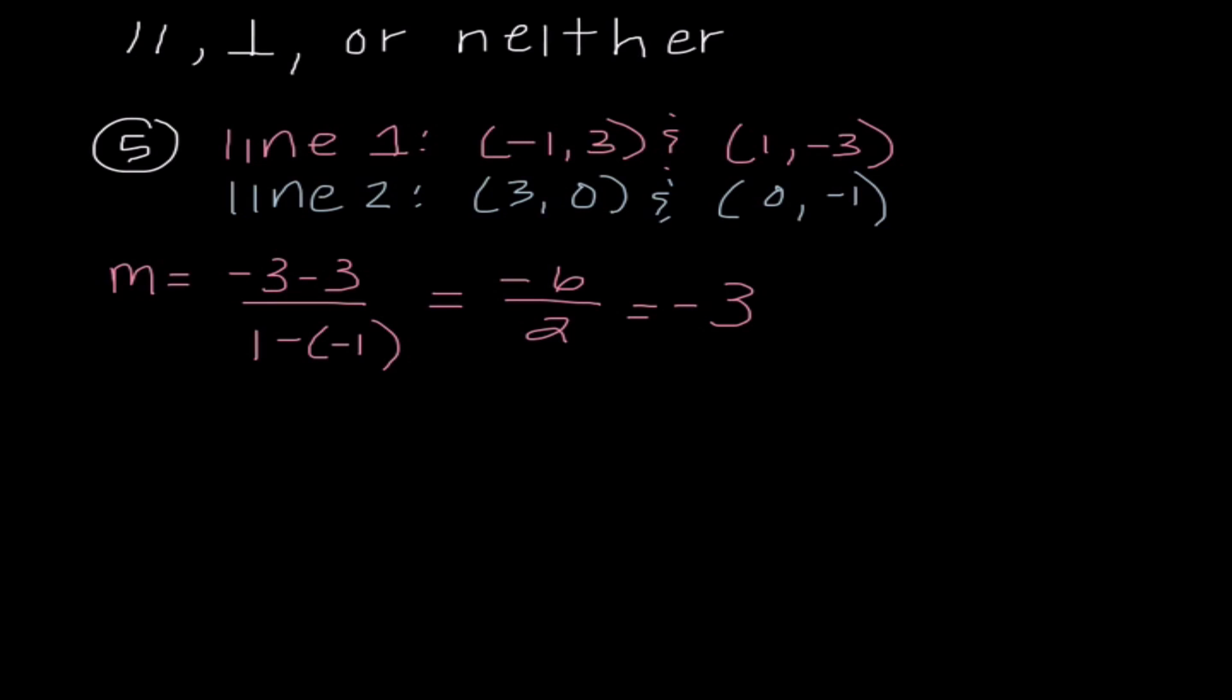If these lines are parallel to each other, the slope of line 2 would have to be negative 3. If these slopes are perpendicular to each other, the second slope would have to be positive 1 over 3. So if I get anything other than negative 3 or 1 third, then I'm going to say that these two lines are neither. So let's look at line 2.